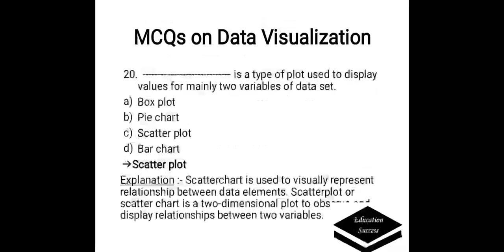Which is a type of plot used to display values for mainly two variables of a data set? Options are: A. Box plot, B. Pie chart, C. Scatter plot, D. Bar chart. Correct answer is scatter plot. Scatter plot or scatter chart is used to visually represent relationship between data elements. It is a two-dimensional plot to observe and display relationships between two variables.